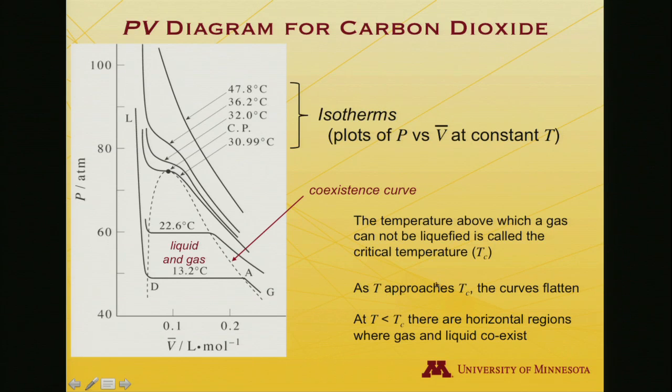As the temperature approaches the critical temperature, the curve flattens and you get this point of inflection. At T below the critical temperature, you see horizontal regions where gas and liquid coexist. Remembering these different regions is critical to understanding a PV diagram.